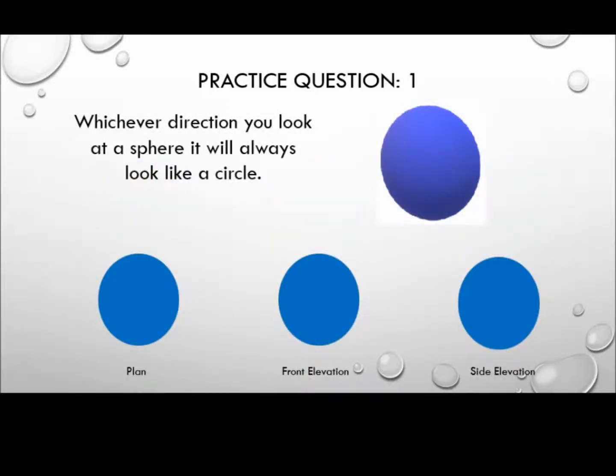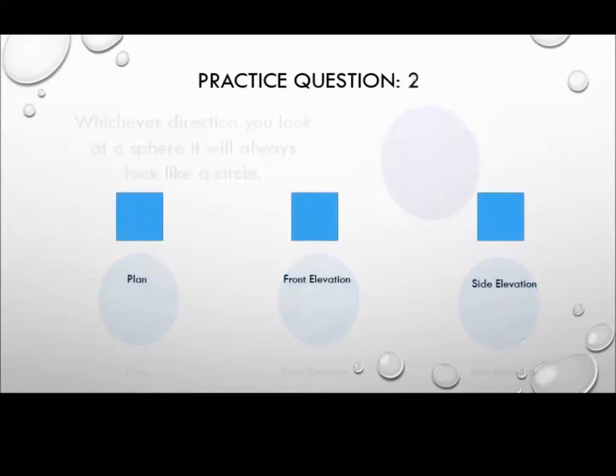A sphere is the only shape that looks exactly circular no matter what angle you look at it from. How did you get on with that one? Let's try another one.